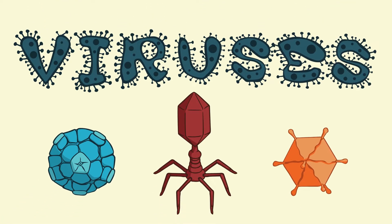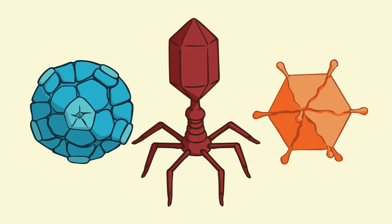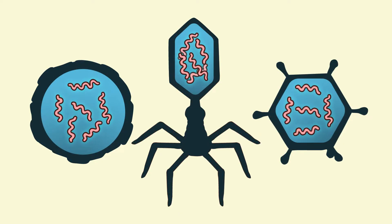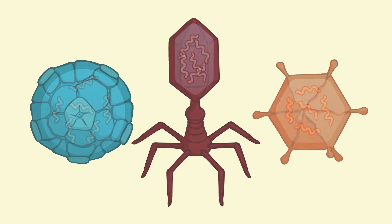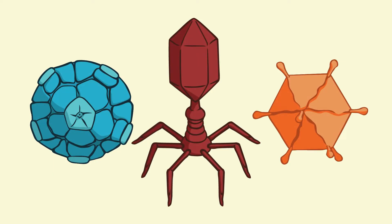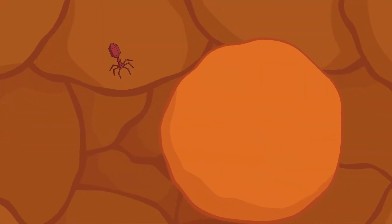Let's first take a look at viruses. Viruses are unique in that, technically speaking, they are not alive. This makes them different from all the other pathogen types. Viruses are made of two parts: a DNA molecule, and a protein coat that surrounds it. In order to reproduce, viruses invade the cells of other organisms.